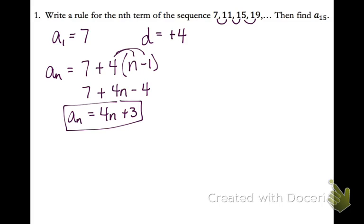So there's my rule, and now I need to find a sub 15. That's my 15th term. Instead of writing out every single term to get to the 15th term, I can just plug 15 into my rule and get out the 15th term. So a sub 15 equals 63.